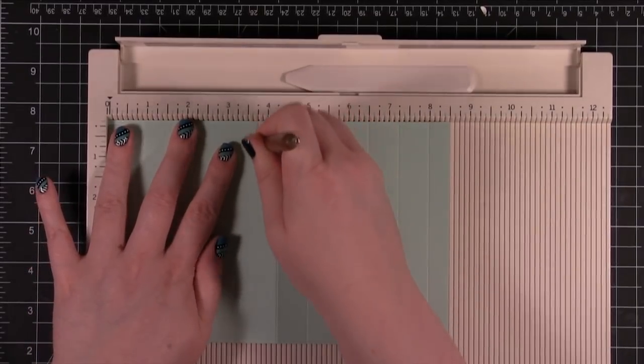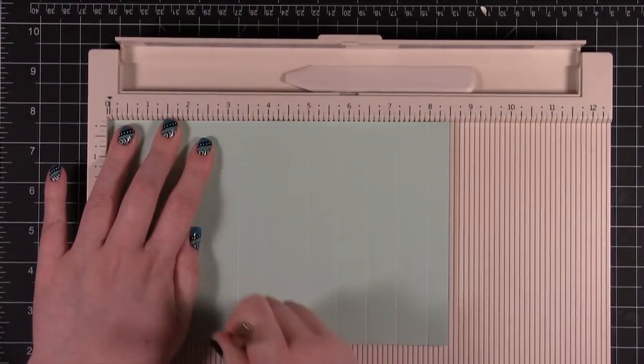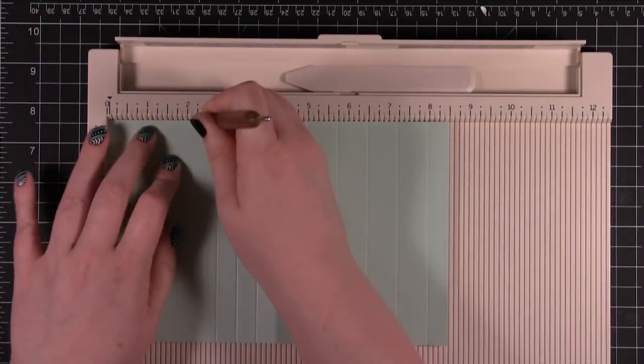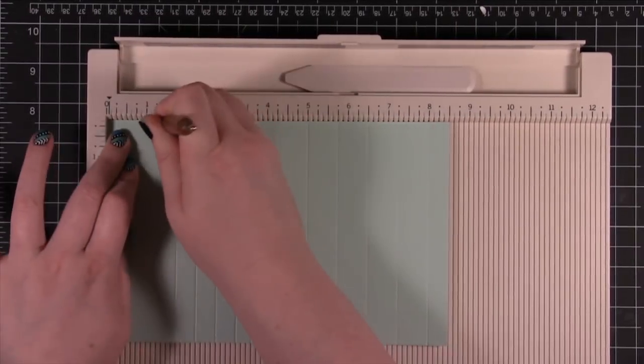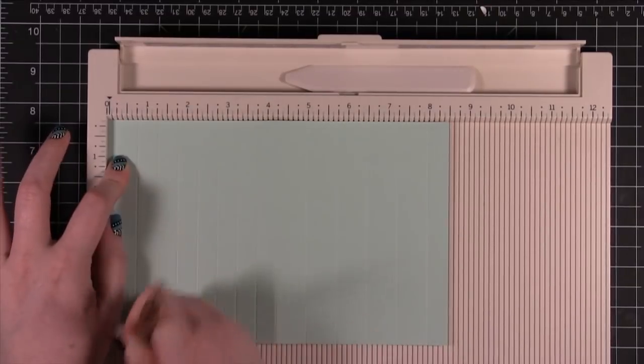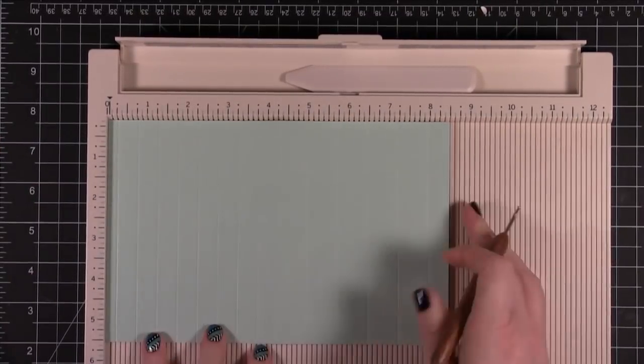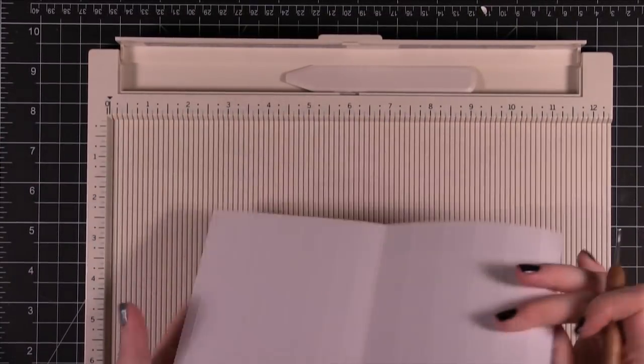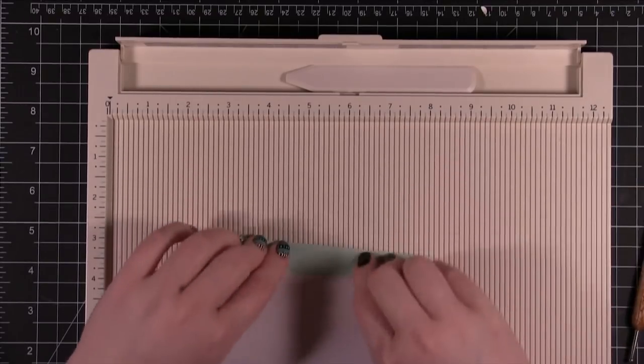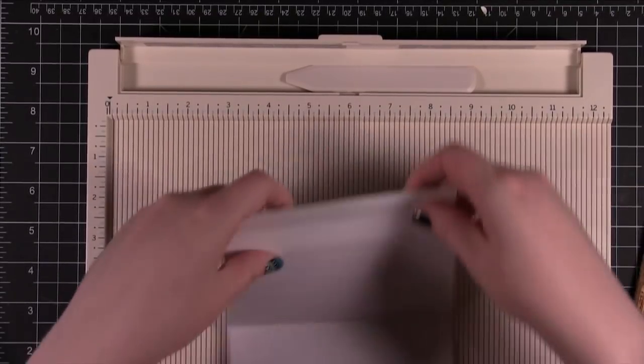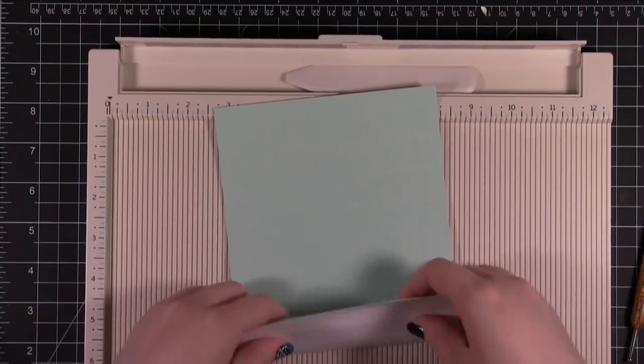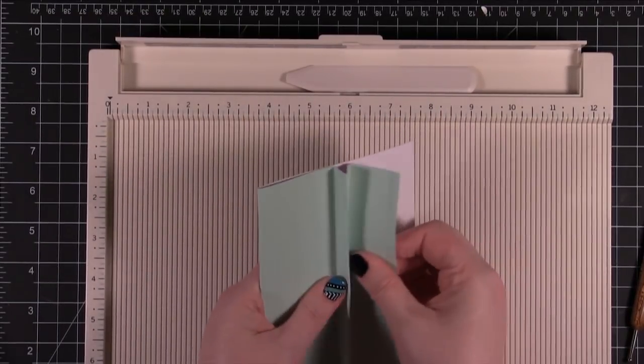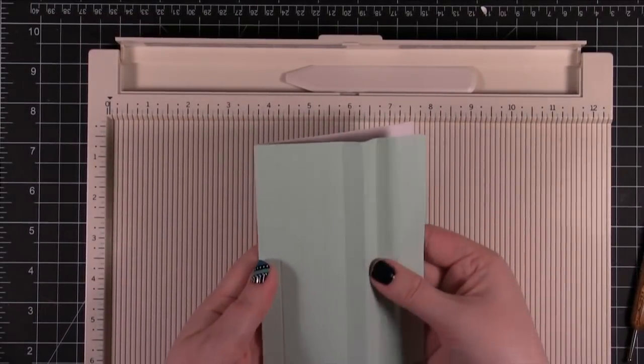You can score it right there. I just find that it runs along the card stock a little bit better. See how quickly that scored? You can even do some little crinkle lines. Anything like that. Get some really cool folds.